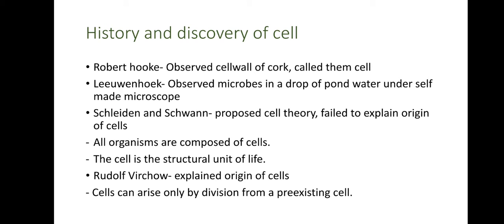This is pretty basic — we already know these things. It was Robert Hooke who for the first time observed the cell, and he also named it 'cell.' He observed them in cork cells, and what he actually observed were cell walls. Leeuwenhoek, who was a cloth and button seller by trade, used to make microscopes in his spare time due to his enthusiasm and curiosity.